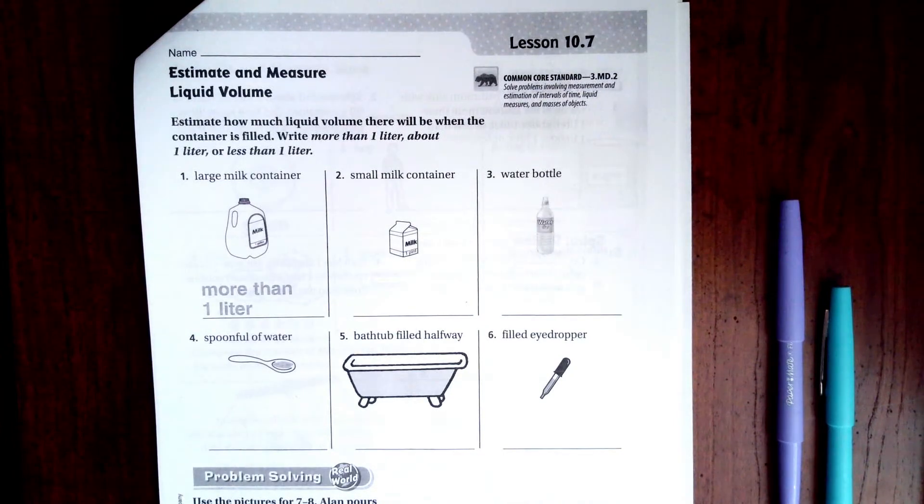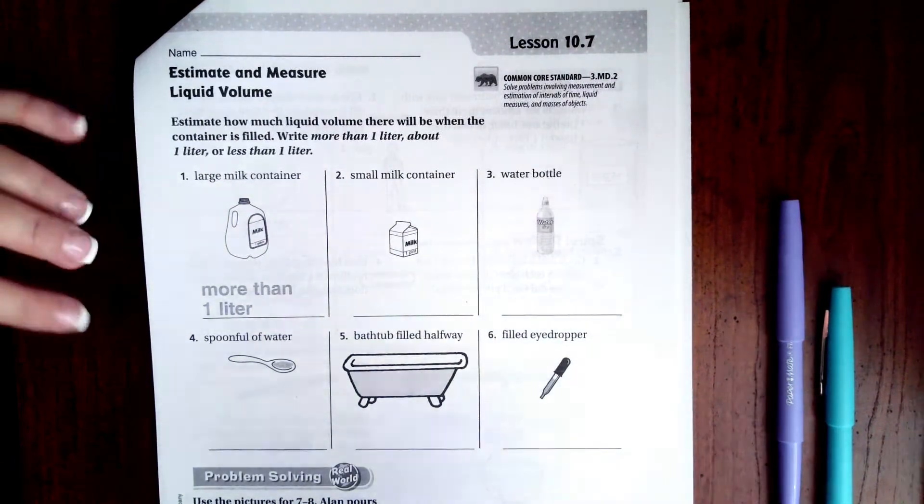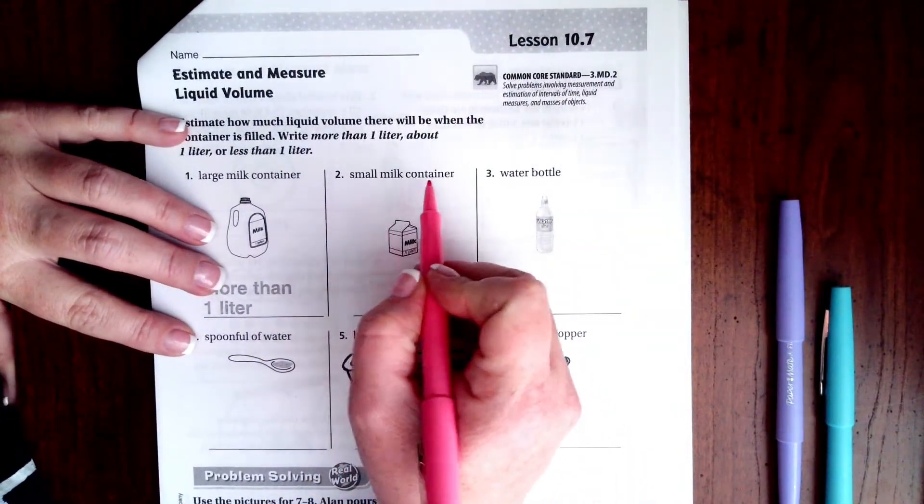A water bottle is going to be less. Obviously a spoonful is going to be less. So let's go ahead and start there. So a small container of milk, that's not a milk jug, that's just one of the little ones that you get from school.